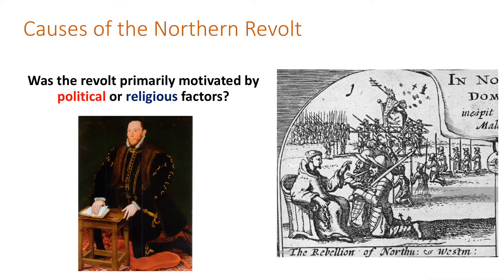The first of the plots or revolts we're going to look at is called the Northern Revolt, which happens in 1569. It happens for two main reasons - political and religious. Part of it is down to Thomas Percy, the Earl of Northumberland, which is one of the areas that is quite strongly Catholic. Him and other important earls, like the Earl of Westmoreland, Charles Neville, are very angry at Elizabeth.